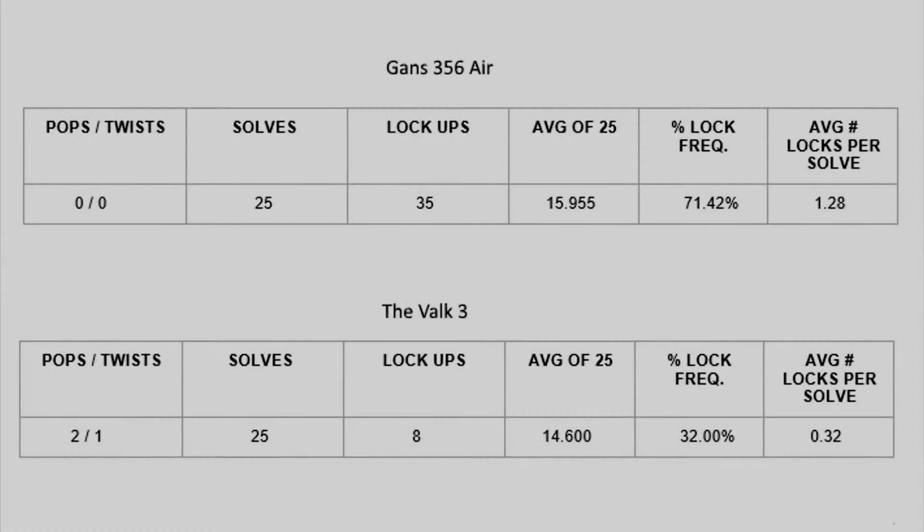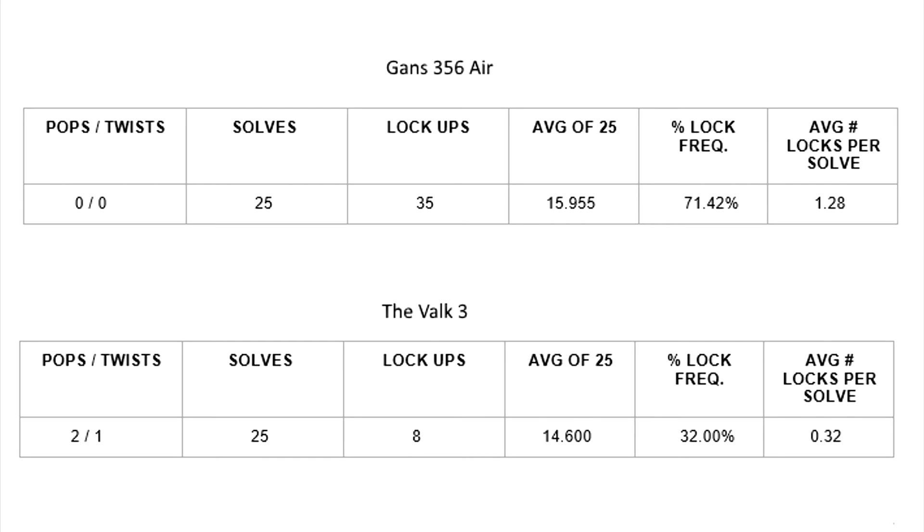To sum up the review and comparison, I did a little experiment. I did 25 solves for both cubes, and it turns out that the Gans locks up a little over 70% of the time. As expected, it has no pops or corner twists. The Valk 3, as you can see, was the opposite. It had one major and one minor pop. It also resulted in one corner twist.